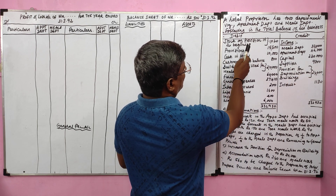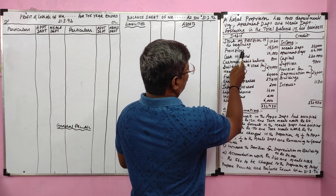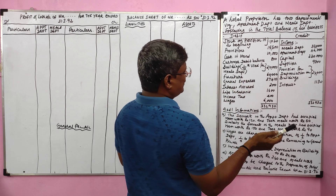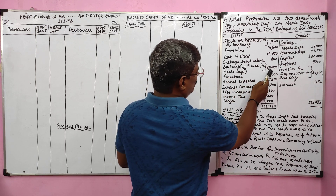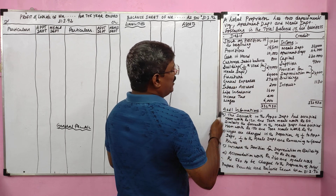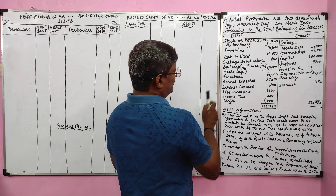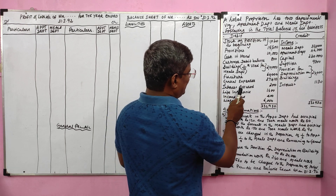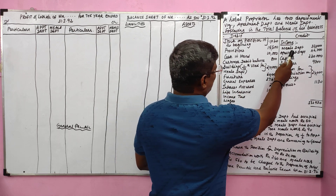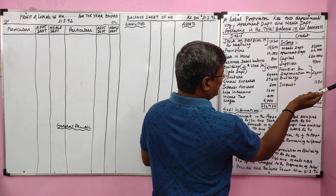Stock of provision in the beginning is the opening stock of groceries. Cash in hand and customer debit balance means debtor. Building worth 210,000, with one tenth used for the meals department — we can use this ratio for the division of depreciation. Furniture, general expenses, interest accrued, life insurance, income tax, wages are on the debit side. On the credit side: income of meals department and apartment department, capital, and supplier which means creditor.